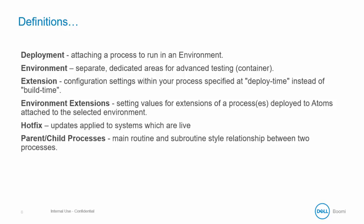You're likely familiar with many of these concepts, but let's take a moment to review them. When we say deployment, we're talking about attaching a process to a runtime environment which then gets executed by an Atom, AtomCloud, or a molecule. The environment is a dedicated area for advanced testing — a container for a particular runtime which allows us to set classification and extensions. Extensions are configuration settings within your process, most commonly connection information, such as URLs, login credentials, a database name, and similar details. These are specified at deploy time instead of at build time.